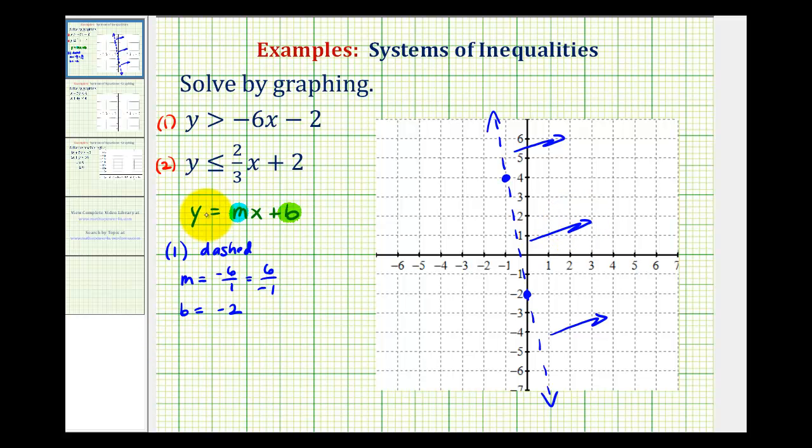Now for the second line, because the inequality symbol is less than or equal, the boundary line is going to be solid. Slope is equal to positive two-thirds, and the y-intercept is equal to positive two.